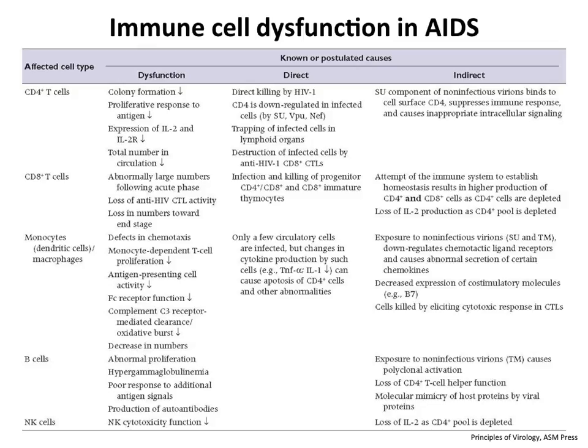HIV doesn't only infect CD4-positive T cells; it affects essentially all immune cell types - CD8s, monocytes, dendritic cells, macrophages, B cells, NK cells. It trashes the entire immune system over 10 to 15 years. This is actually a brilliant - if evil - evolutionary strategy: the host is eventually killed by opportunistic infections, not directly by the virus, and all that time the virus has been spreading. This illustrates the extensive immune dysfunction the virus causes.